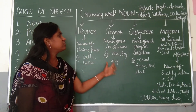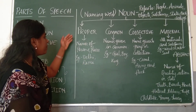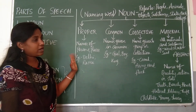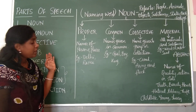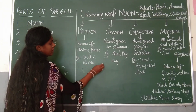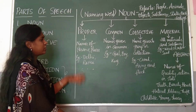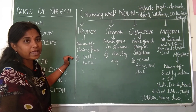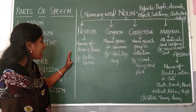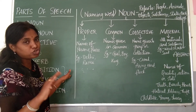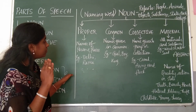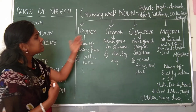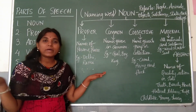Proper noun is the name given to specific persons, places, animals, and living creatures. For example, Delhi, Rama — names of human beings, animals, and places. In short, names of all living things and names of specific places come under proper noun.